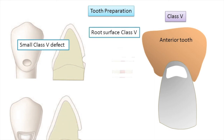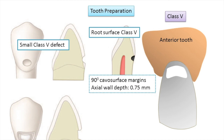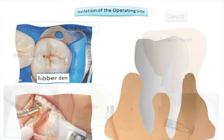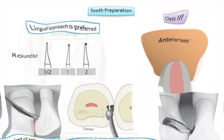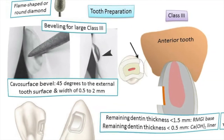For Class 5 caries involving the root portion of the tooth, the features of preparation include a 90-degree cavosurface margin. The axial wall may or may not be uniform in depth, and axial depth into the dentine is determined by selective removal of caries tissue, extending up to about 0.75 millimeters. Proximal view images illustrate how a Class 5 preparation on the root surface region should appear. This concludes the cavity preparation for anterior teeth involving Class 3, Class 4, and Class 5 caries. The next presentation will discuss cavity preparation for posterior teeth and the restorative part of composite resins.